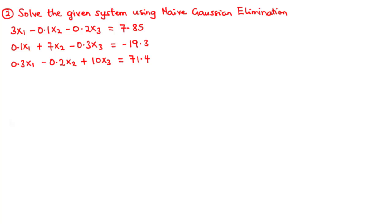Now let's move on to the second example. In this example, we are going to solve the given system of equations using the naive Gaussian elimination method. Like we did in the previous example, we first need to represent the system in the augmented form.